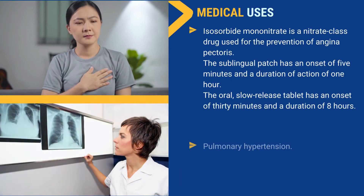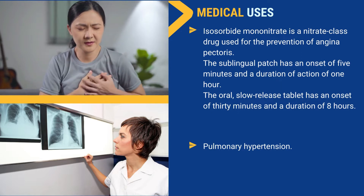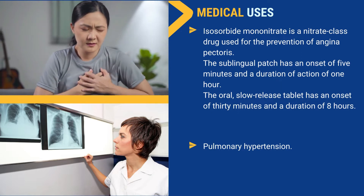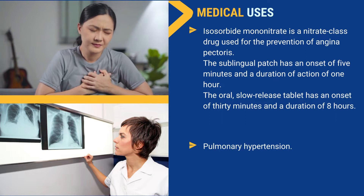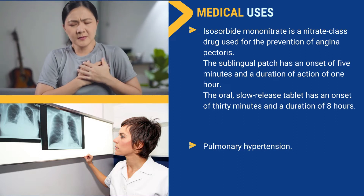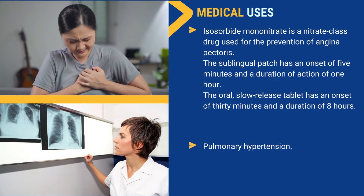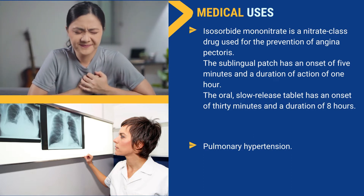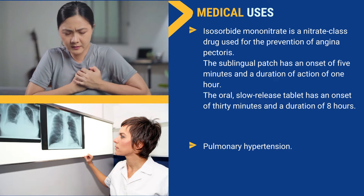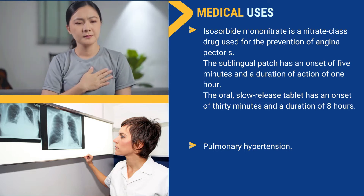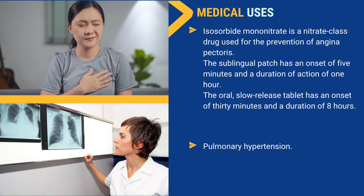Medical uses: Isosorbide mononitrate is a nitrate class drug used for the prevention of angina pectoris. The sublingual patch has an onset of 5 minutes and a duration of action of 1 hour. The oral slow-release tablet has an onset of 30 minutes and a duration of 8 hours.